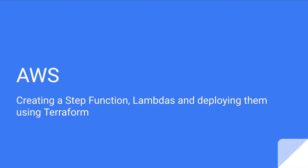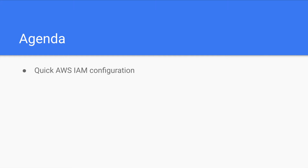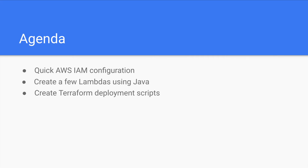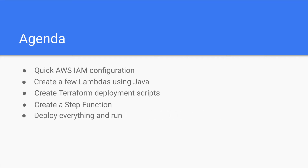If you like the video, don't forget to subscribe to the channel, because I will post more videos and share them with you. In the agenda for today we have: quick AWS IAM configuration (this will be used for Terraform), create a few lambdas using Java, create Terraform deployment scripts, create a step function and bind all of them together, then deploy everything and run.